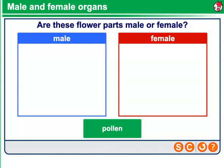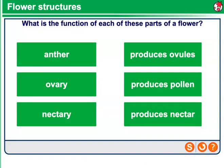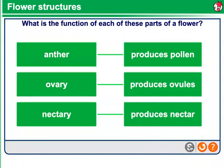Thinking about these parts of the flower, what are the male and what are the female organs? The male portions are the anther, the pollen, and the stamen, whereas the female portions are the ovule, the ovary, and the stigma. The anther produces pollen, the ovary produces ovules, and the nectary produces the nectar.